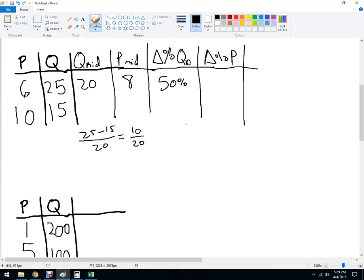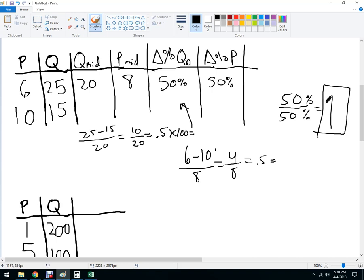I'm skipping some steps, but I guess I can go back and do this times 100. Change in price - for this one, it's 6 minus 10 over 8, so it's 4 over 8, which is also 50%. So 50% over 50%. This gives us an elasticity of 1, so that's unitary elastic, which means that for every 1% price change, it's going to be 1% quantity change. So just be aware of that.